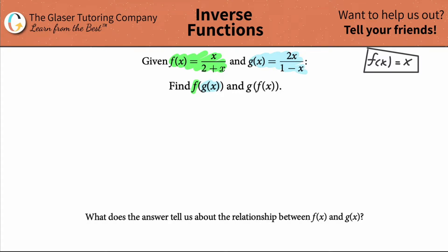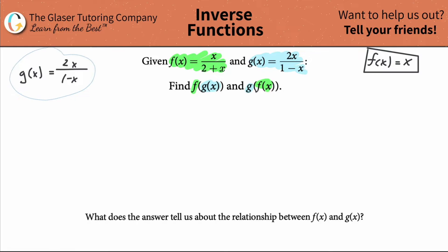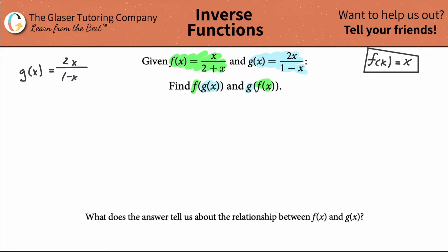Now we're going to do the second composition g of f of x. Start from the outside and move in — write your g function first. So g of x is equal to two x over one minus x. Now everywhere you see an x, you substitute in f of x, which is x over two plus x. So g of x equals two times x over two plus x, all divided by one minus x over two plus x.